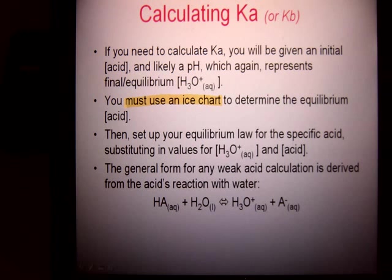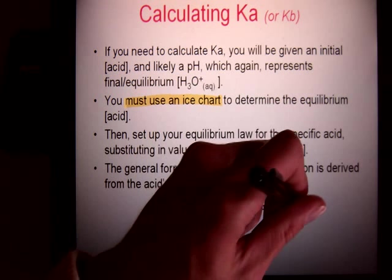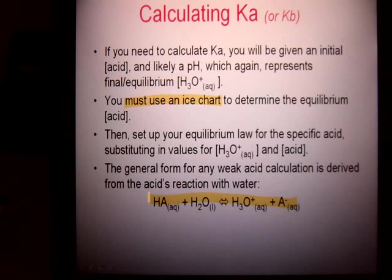Since it doesn't really matter what the acid type is or base because they always follow the same pattern, just use one reaction like that. Use that as your pattern. HA plus water gives hydronium and A minus.